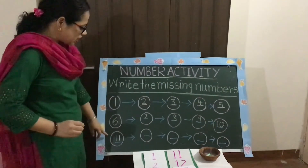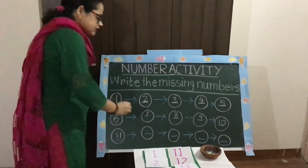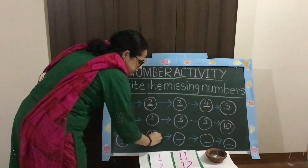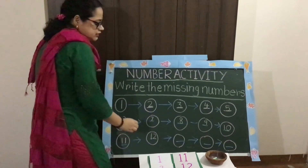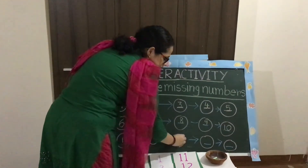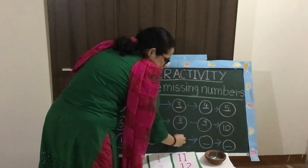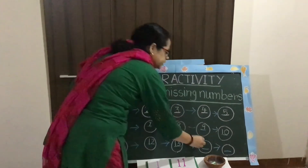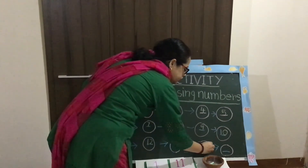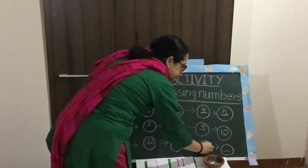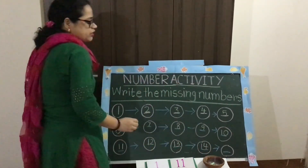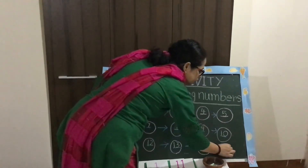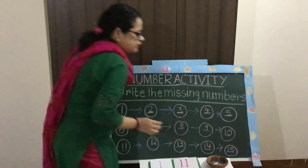1-1, 11. Next number of 11 is 1-2, 12. Next number of 12 is 1-3, 13. Next number of 13 is 1-4, 14. Next number of 14 is 1-5, 15.